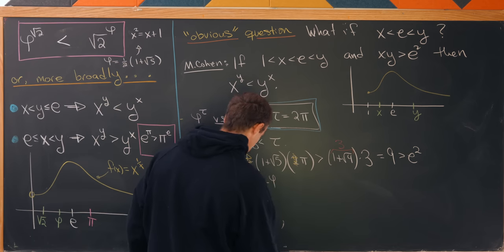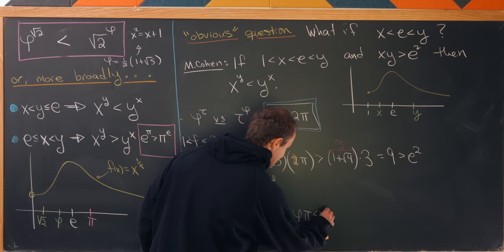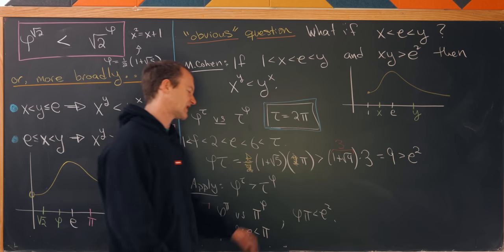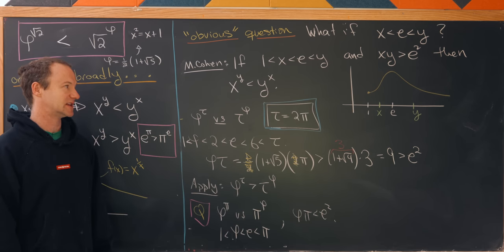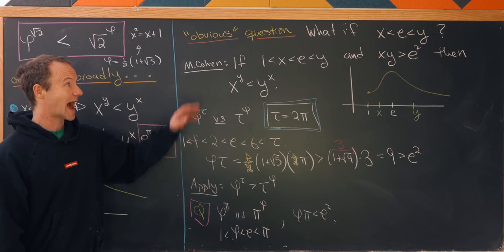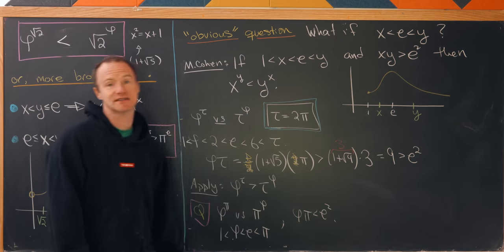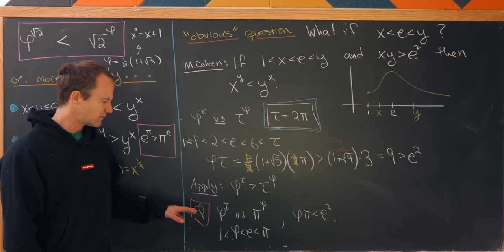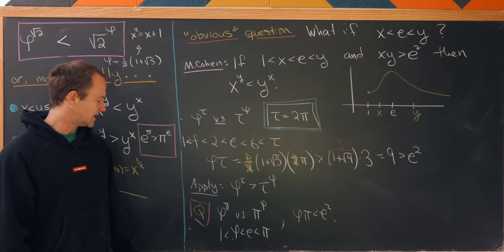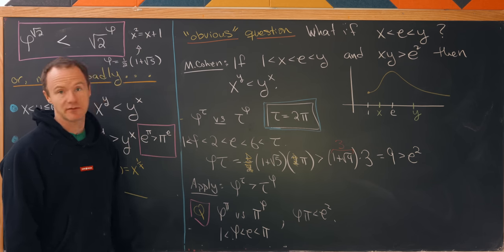In fact, here we have phi times pi is less than e squared. I won't check that carefully, but you can check that it's less than e squared. But notice that this result, as written, doesn't say anything about the case when this inequality is not satisfied.